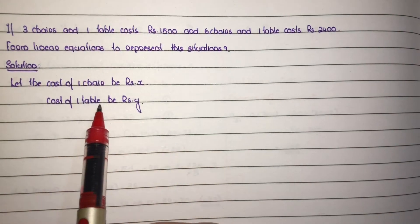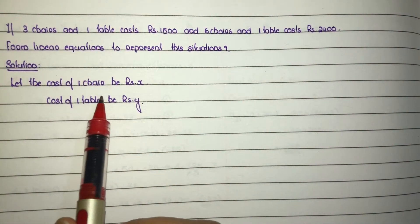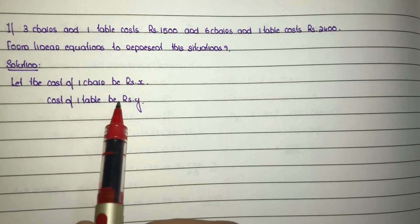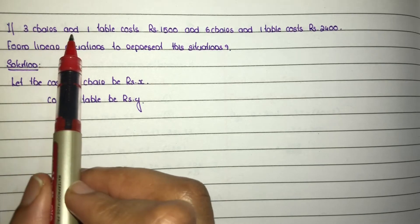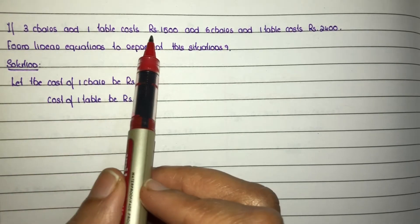So let the cost of one chair be rupees x and cost of one table be rupees y. Next, first part: three chairs and one table cost rupees 1500.